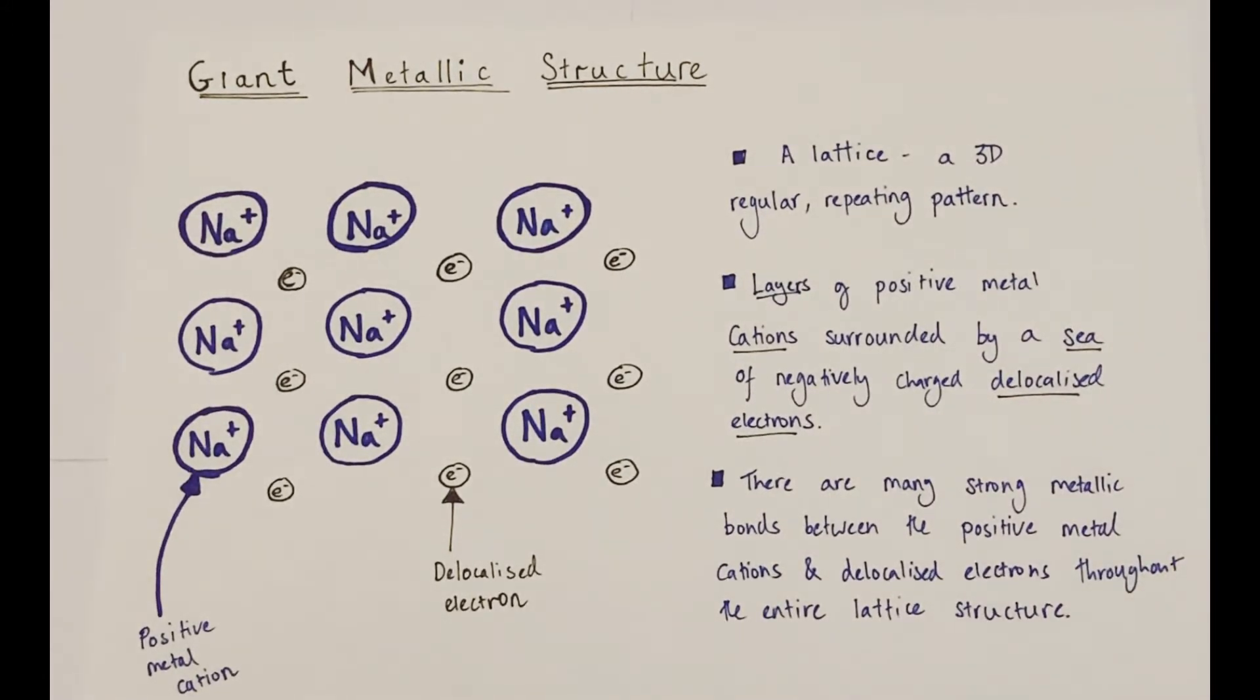Metals in particular possess layers of positive metal cations surrounded by a sea of negatively charged delocalized electrons. And there are strong metallic bonds between the positive metal cations and delocalized electrons throughout the entire lattice structure. So it creates an incredibly strong structure as a result. Each of these positive cations is being pulled towards the negative electrons between them. And this inward attractive force is holding the entire metallic structure together.